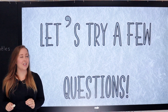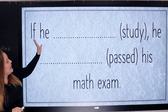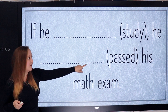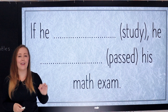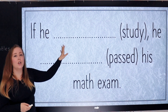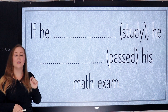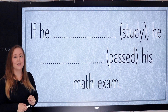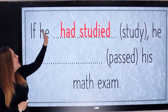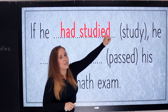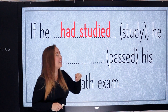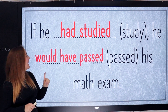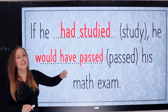Let's try a few questions. Here's the first one: 'If he ___ (study), he ___ (pass) his math exam.' Don't forget — we want to use the past perfect, using 'had' and the verb in the past participle. How do we say 'study' in the past participle? It's a regular verb, so: 'If he had studied' — just be careful with the spelling: we don't use -y, we use -i-e-d. And then: 'He would have passed his math exam.'